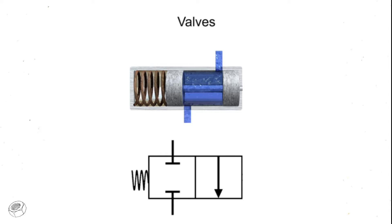In most air and hydraulic fluid power circuits, valves are used to control the direction, rate, and pressure in fluid lines.